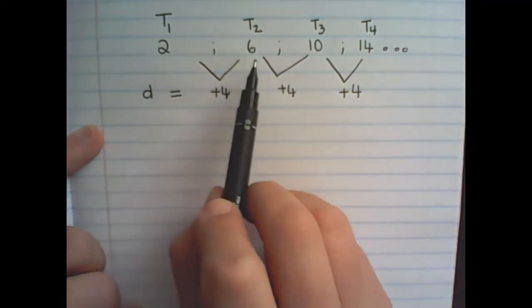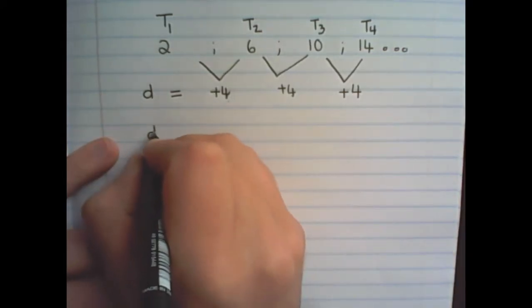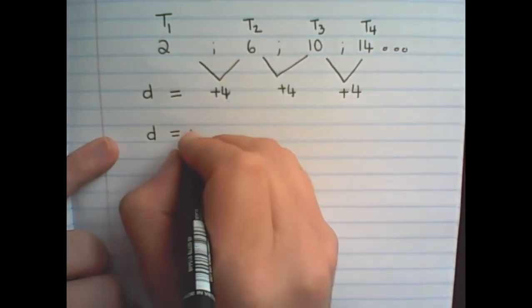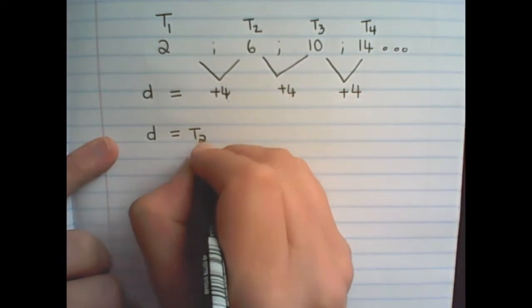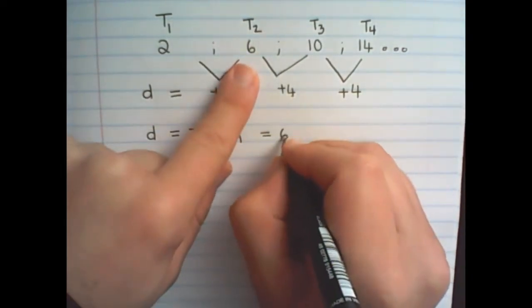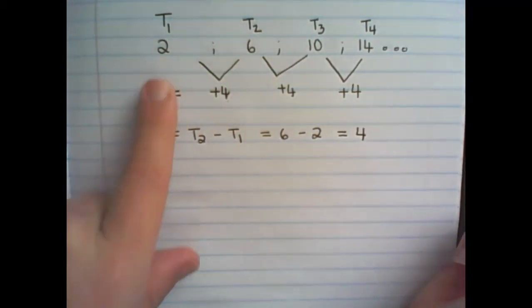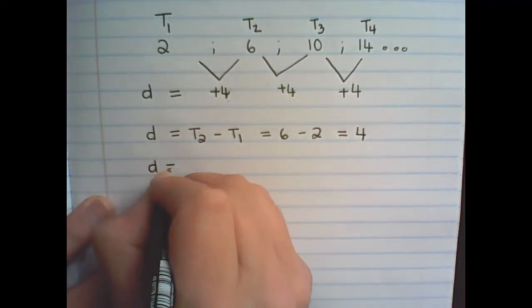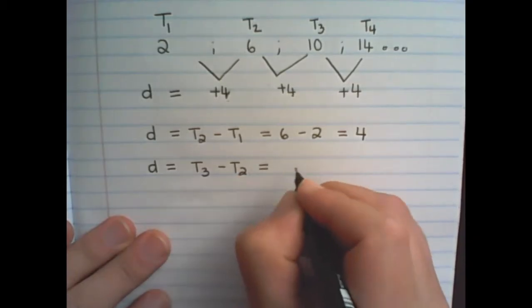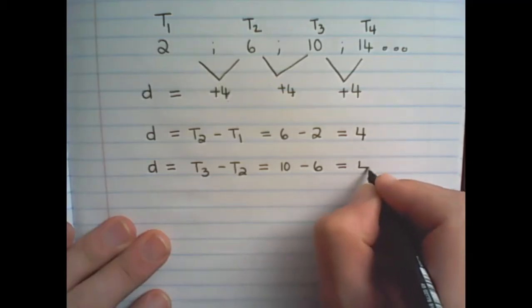But you don't have to draw little diagrams like this in order to find d. You can also find d, the difference between the terms, by saying, Term 2 minus Term 1. That is, Term 2 is 6, minus Term 1, which is 2, that is equal to 4. And, you can say, Term 3 minus Term 2, which would be 10 minus 6, and that will also give me 4.